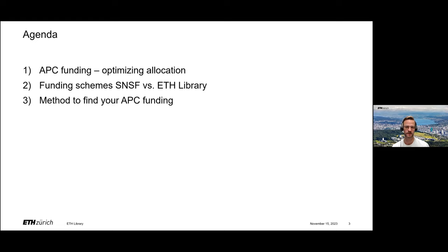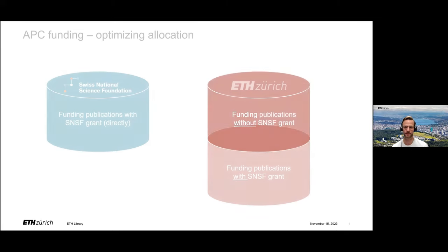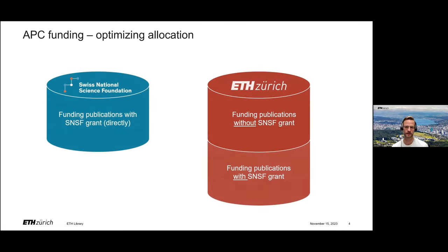Just to avoid any misunderstandings upfront: APC means Article Processing Charge and is the official wording for publication fee. Nowadays you usually have to pay this fee — the APC — to make your publication openly accessible without any restrictions.